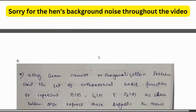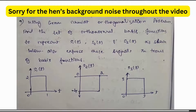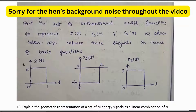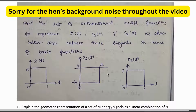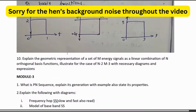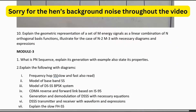The same concept appears with different values or graphs. Using the Gram-Schmidt orthogonalization procedure, find the set of orthonormal basis functions to represent s1(t), s2(t), and s3(t) as shown — here three graphical representations are given. You have to solve using the Gram-Schmidt orthogonalization procedure. Also study the geometric representation of a set of M equal-energy signals problem.